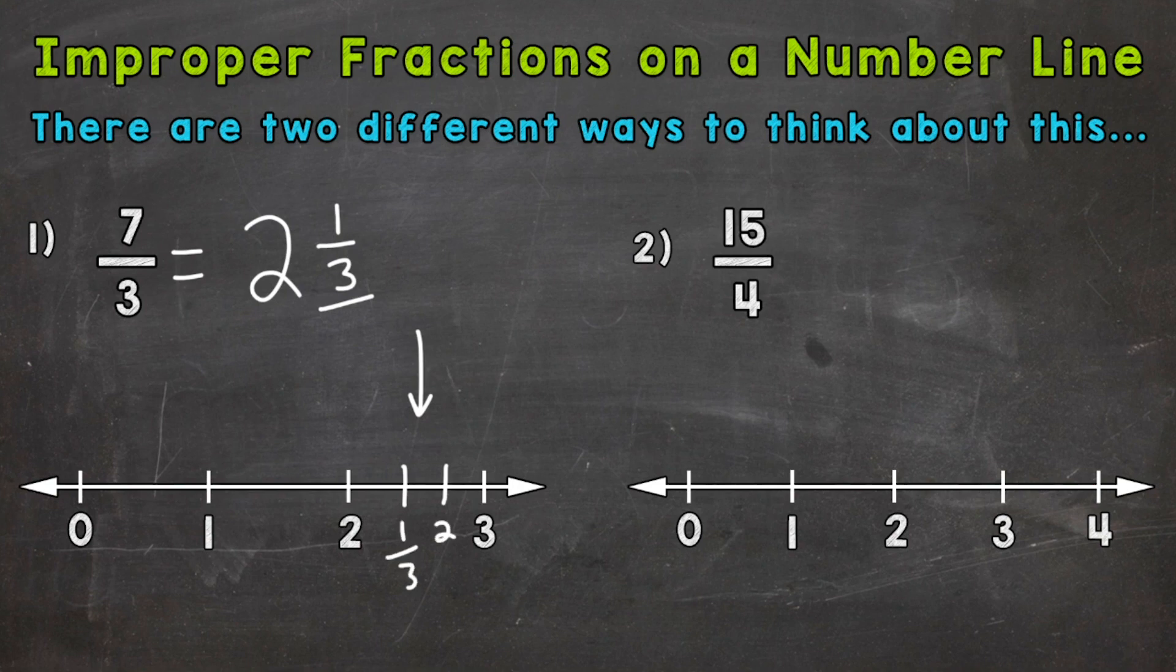And then we have two and two thirds. Now two and three thirds would be our next mark. This three right here. Two and three thirds. Because three thirds is equivalent to one whole. So two plus that one whole would give us three. Remember, whenever you have the same numerator and denominator, it equals one whole. So our given fraction or mixed number is seven thirds or two and one third, which would be right there.